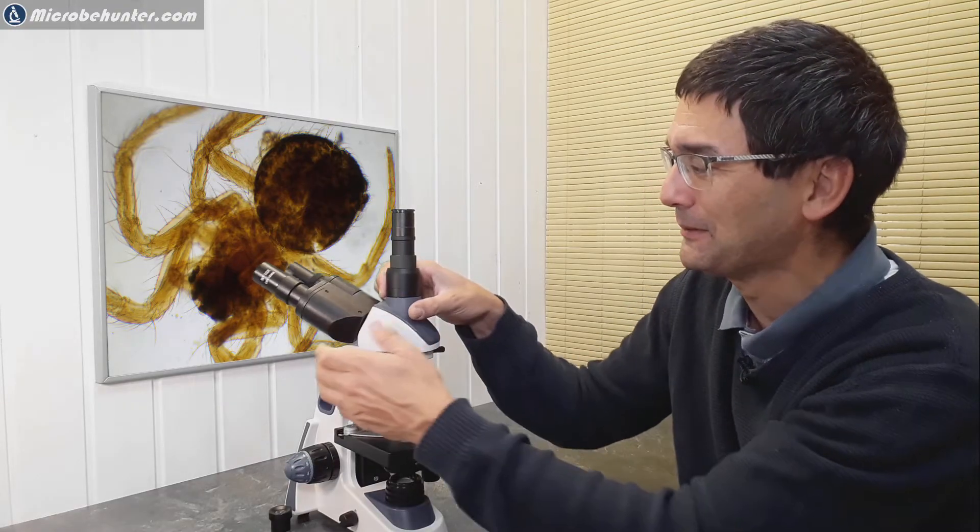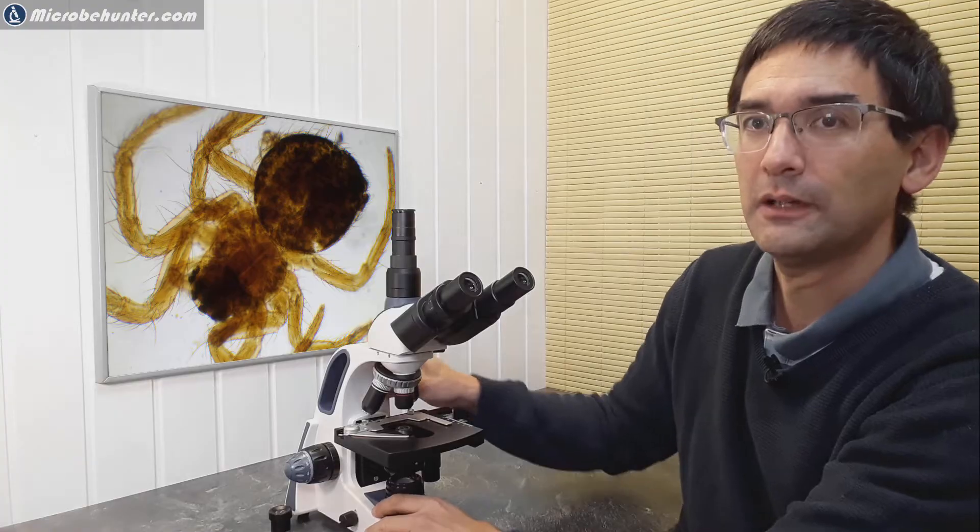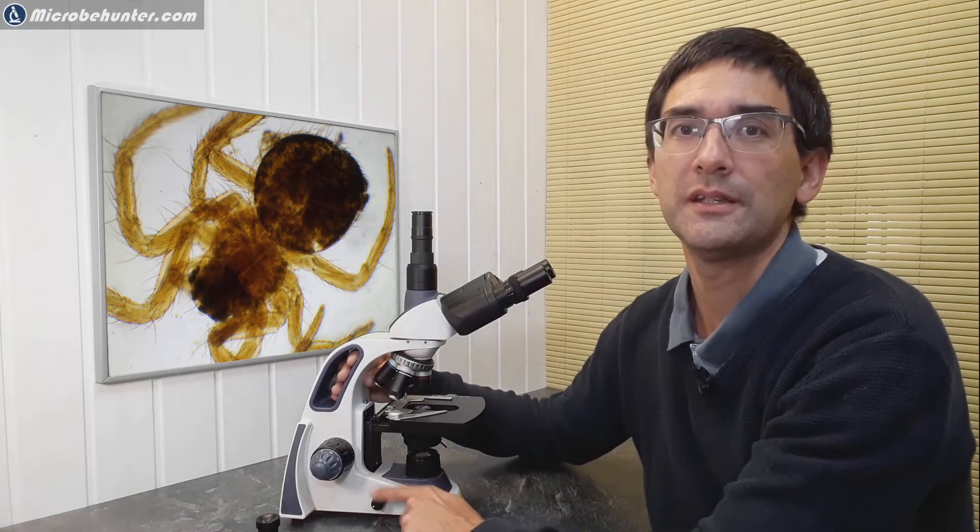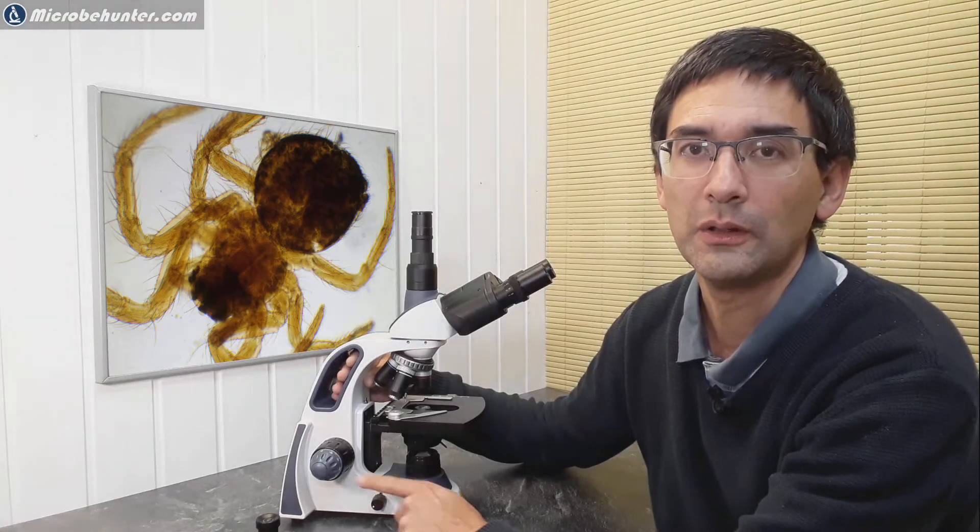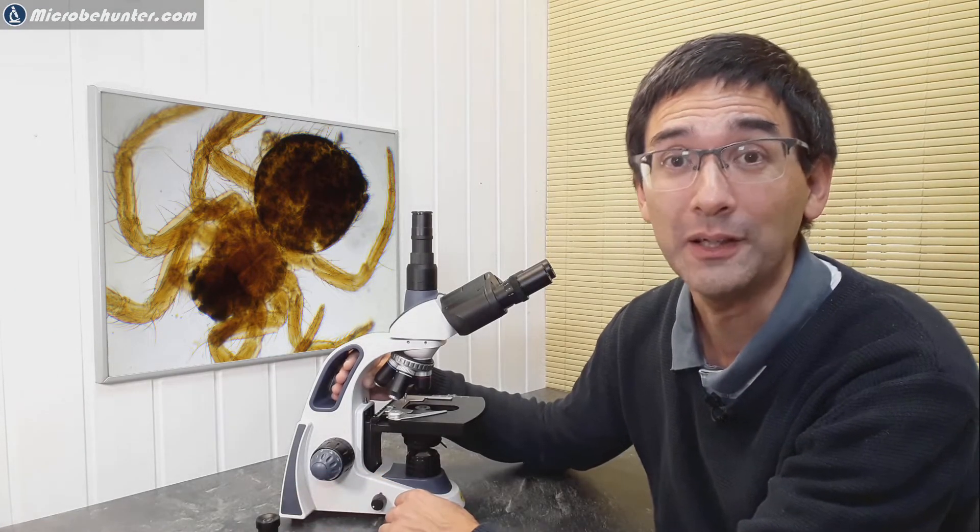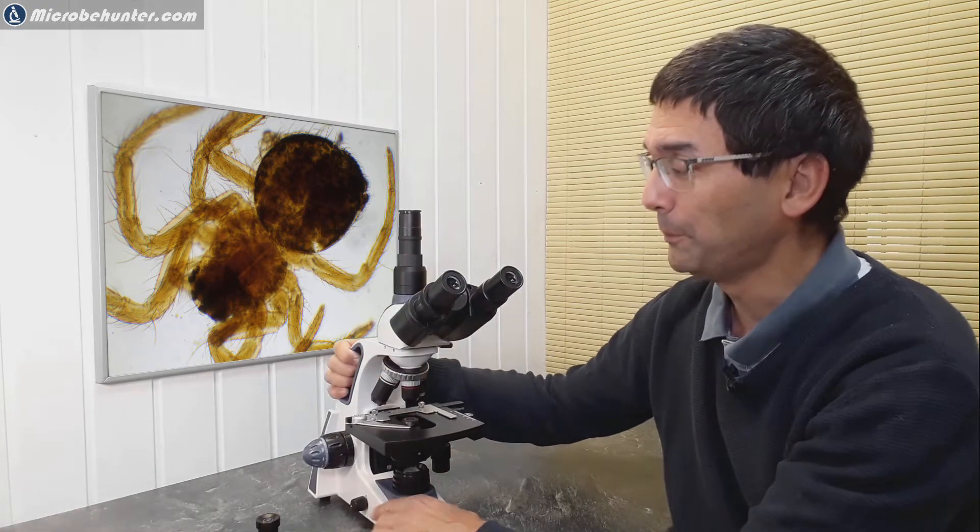What else do we have here? On the side here, down here, this is the light intensity control. It's an LED microscope and I would say that the LED is quite bright.